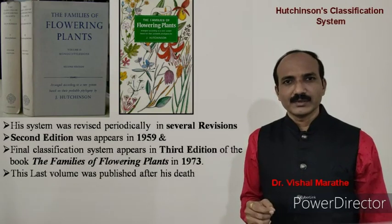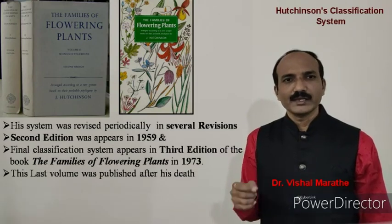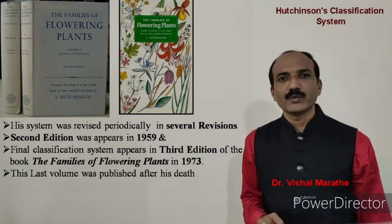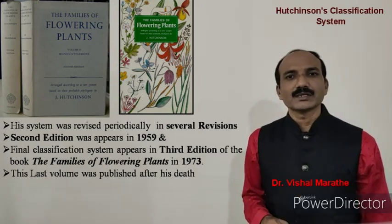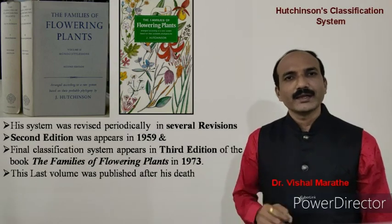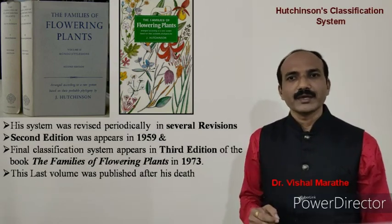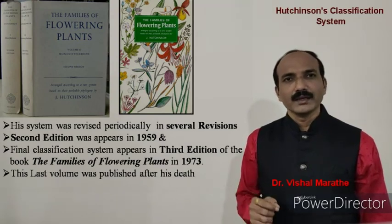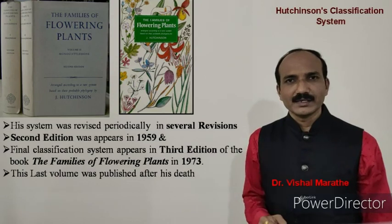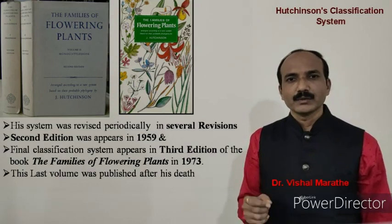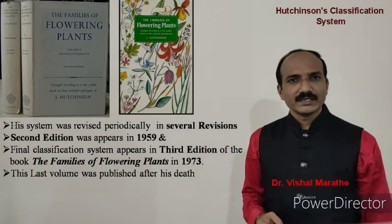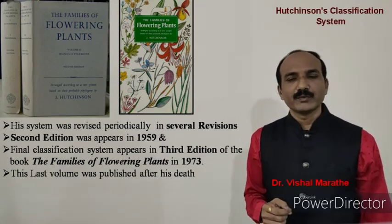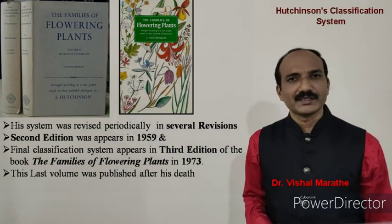His classification system and books were continuously revised. The system was revised periodically in several revisions. The second edition appeared in 1959, and the final classification system appeared in the third edition of The Families of Flowering Plants in 1973. This third edition was published after his death.